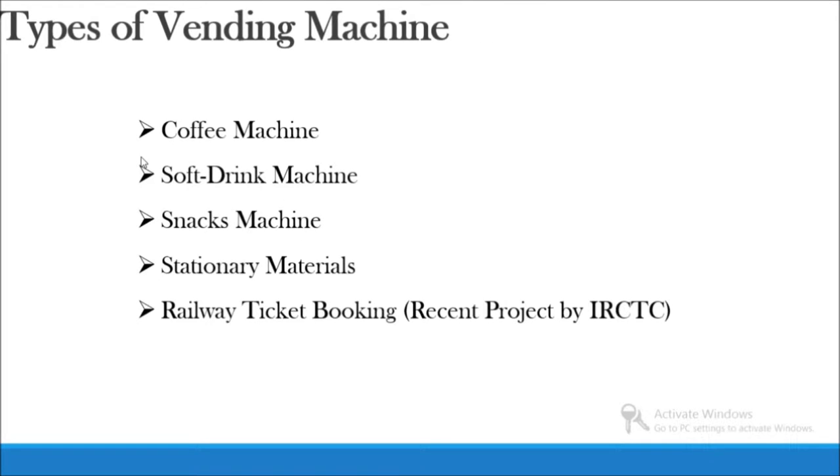Types: Coffee machine, soft drink machines, snacks, stationery materials, and newly implemented railway ticket bookings.